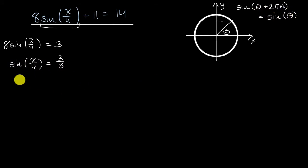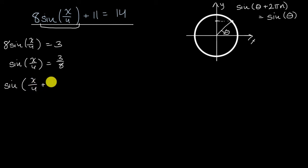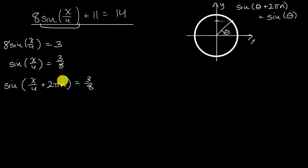We can generalize: instead of just saying sine of X over four equals 3/8, we write that sine of X over four plus any integer multiple of 2π is equal to 3/8, where N is any integer — including negative values like -1, -2, or zero, one, two, three, and so on. So is solving for X here going to give us the most general solution set?